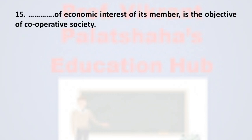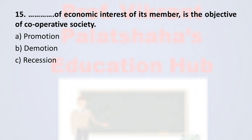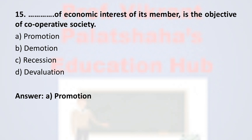Question number 15: ___ of economic interest of its members is the objective of cooperative society. Option A: promotion. Option B: demotion. Option C: recession. Option D: devaluation. The correct option is option A, promotion. Promotion of economic interest of its members is the objective of every cooperative society. Therefore, the correct option is option A.